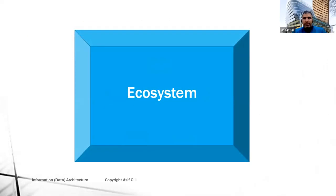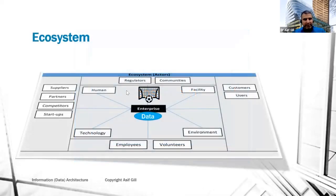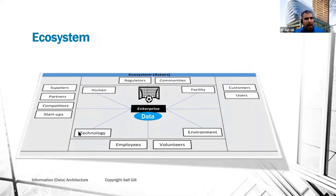Data sharing is by default in the current modern, digitally connected world. We have an ecosystem perspective where different actors — suppliers, partners, competitors, employees, volunteers, customers, users, communities, regulators — all actually interact with your data. We need to consider data and information as part of the whole ecosystem when we design the architecture. We can't just assume the data or information will stay within the boundary of the enterprise. That's really a mindset shift.